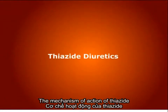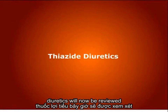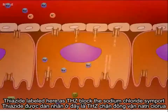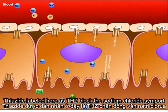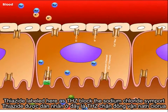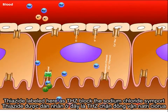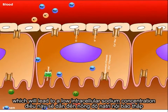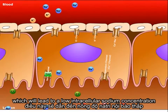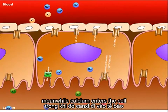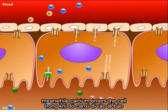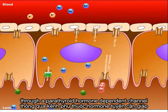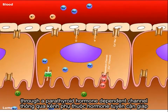The mechanism of action of thiazide diuretics will now be reviewed. Thiazides, labeled here as THZ, block the sodium-chloride symport, thus inhibiting their reabsorption, which will lead to a low intracellular sodium concentration. Meanwhile, calcium enters the cell through a parathyroid hormone-dependent channel.